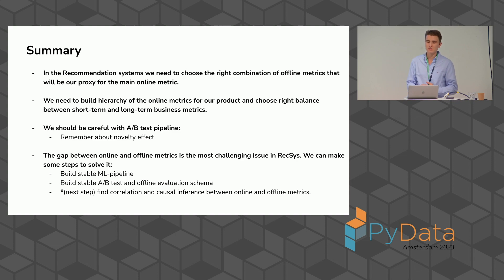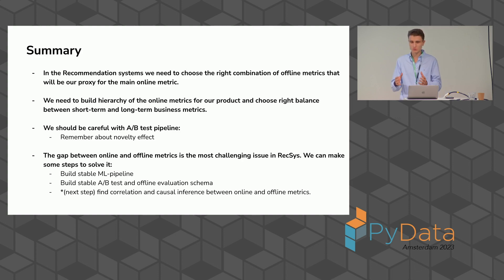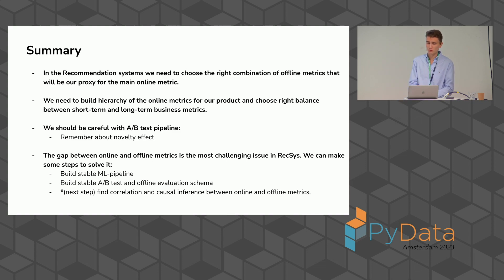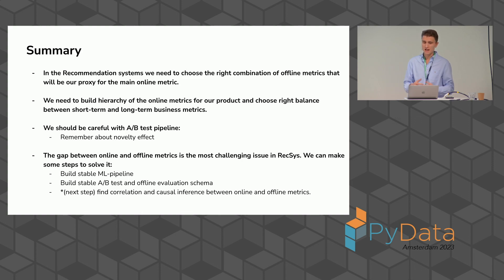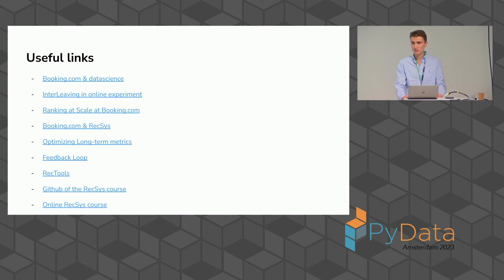This gap is the most challenging issue in recommendation systems. Of course, if we could solve it completely, we could build models and increase revenue — but that's not true. We can reduce this problem by building a stable machine learning pipeline, a stable A/B test and offline evaluation schema, and then try to find correlations between online and offline metrics. Thank you for your attention.